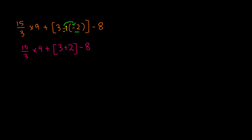The next thing we have to do is solve this pair of brackets. We have 3 plus 2. Remember to keep everything else as it is, and just do the step you're doing. So 15 divided by 3 times 9 plus, and then 3 plus 2 equals 5, minus 8.